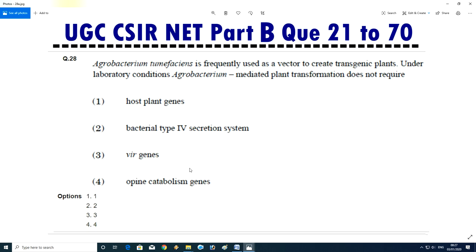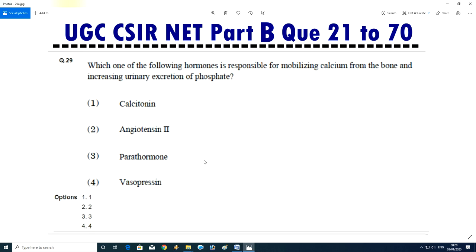Question No.29/30 - Agrobacterium tumefaciens is frequently used as a vector to create transgenic plant under laboratory condition. Agrobacterium mediated plant transformation does not require host plant gene, bacterial type 4 secretion system, VIR gene, or opine catabolism gene. The answer is D, opine catabolism gene.